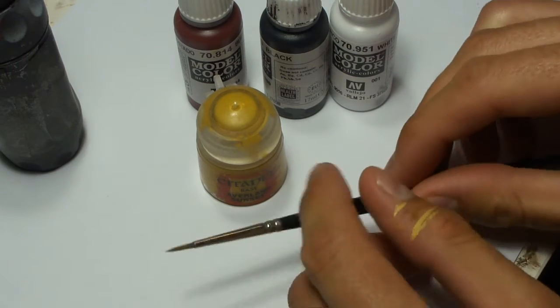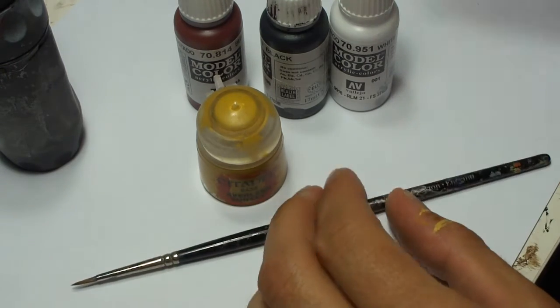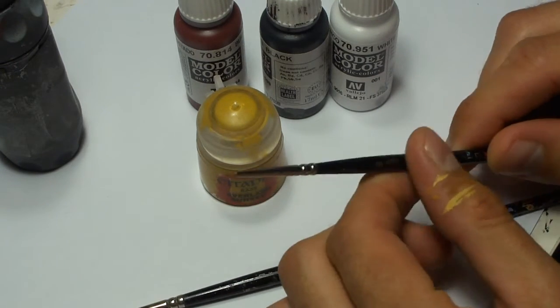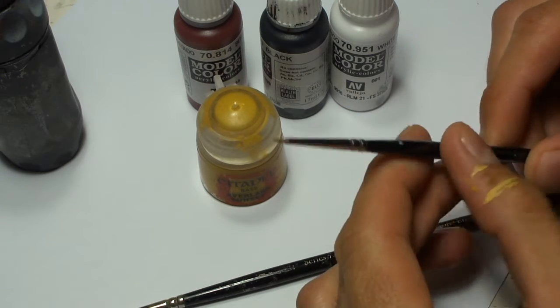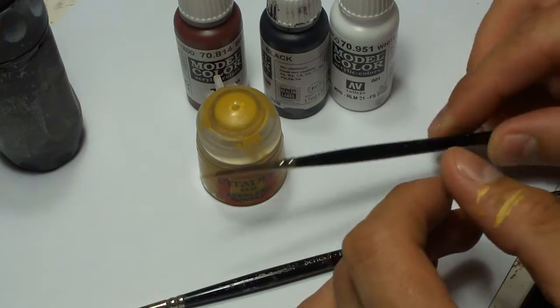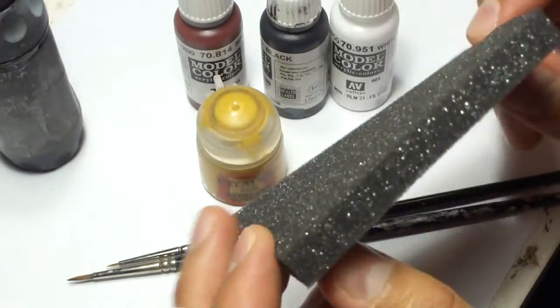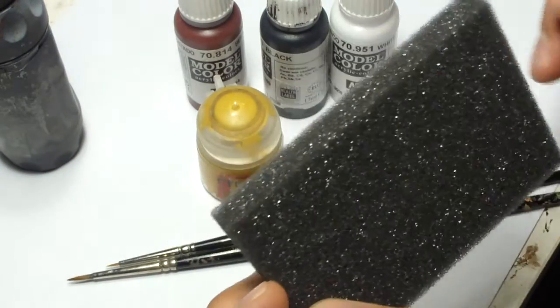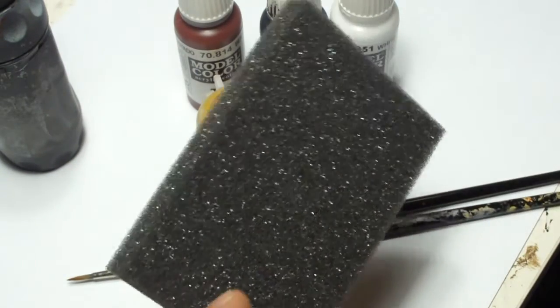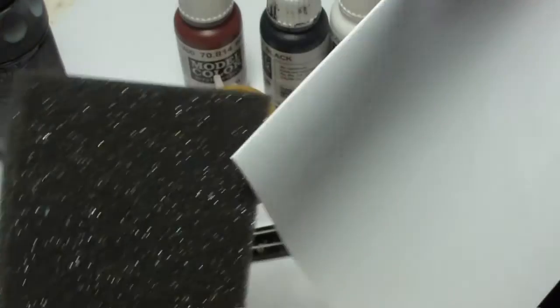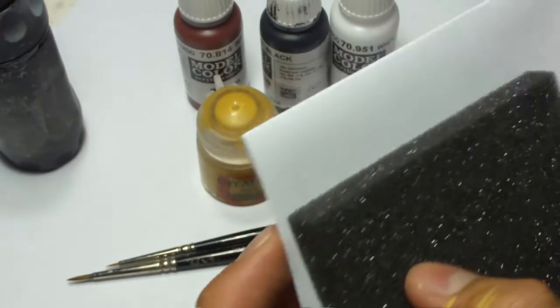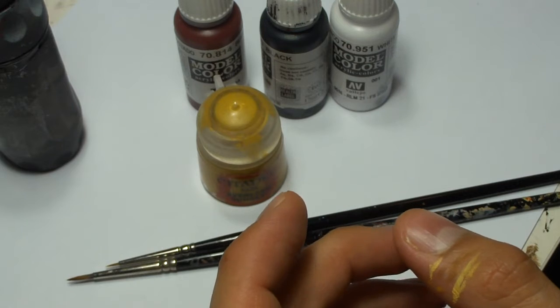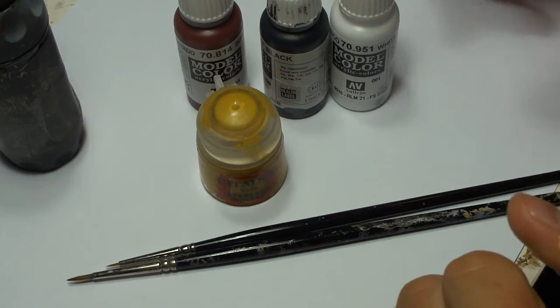Then we'll need a regular brush, this Winsor & Newton Series 7 size 1, and then a very fine brush, this is Winsor & Newton Series 7 00 miniature, so very tiny brush. Then a piece of blister foam, and then a sheet of white paper is also quite important. I'll show you later how I will work with this. And then of course the other basics like a palette and stuff you usually use. Let's get started.